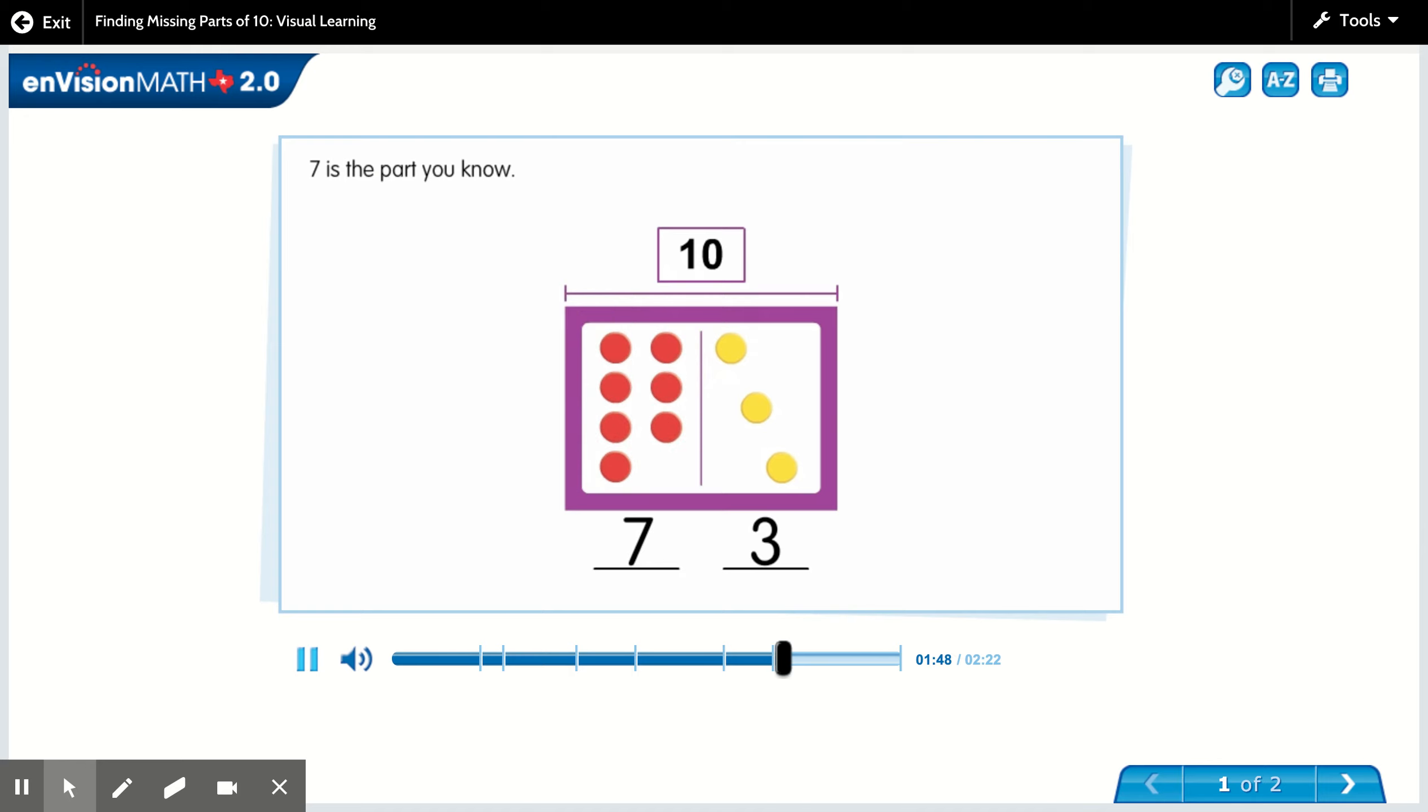Seven is the part you know. Ten is the whole. You can start at seven and count on three numbers to ten. Eight, nine, ten. So you know the missing part is three.